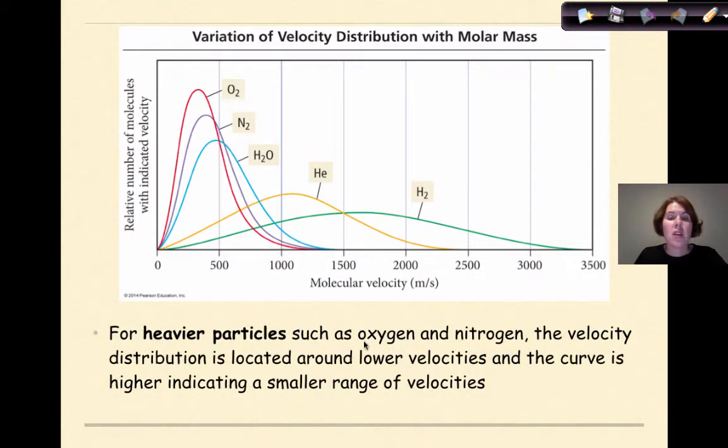For heavier particles, such as oxygen and nitrogen, the velocity distribution is located around lower velocities, and the curve is higher, indicating a smaller range of velocities. So my curve is higher because my range is smaller, and because they're heavier, they're found more commonly around the lower velocities. So this is the average velocity of an oxygen. That would be its peak right here. Here would be the average velocity of nitrogen. So because they're heavier, they're going to have a smaller range of velocities.